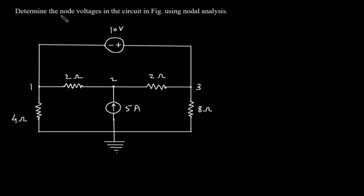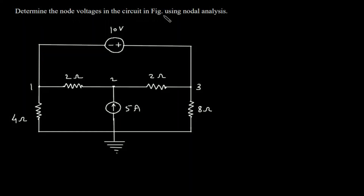Determine the node voltages in the circuit using nodal analysis. We have to find this voltage, this voltage, and this voltage. As we can see, between node 1 and node 3, there is a voltage source. This forms a supernode.